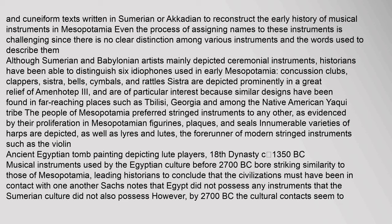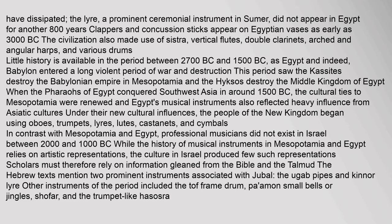Musical instruments used by the Egyptian culture before 2700 BC bore striking similarity to those of Mesopotamia, leading historians to conclude that the civilizations must have been in contact with one another. By 2700 BC the cultural contacts seem to have dissipated — the lyre, a prominent ceremonial instrument in Sumer, did not appear in Egypt for another 800 years. Clappers and concussion sticks appear on Egyptian vases as early as 3000 BC. The civilization also made use of sistrum, vertical flutes, double clarinets, arched and angular harps, and various drums.